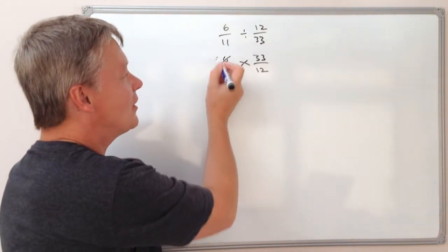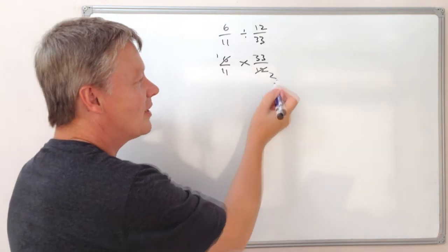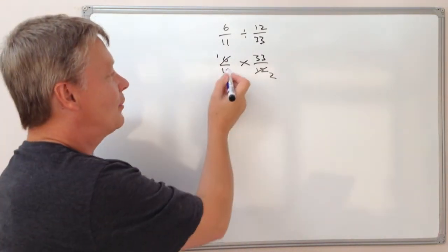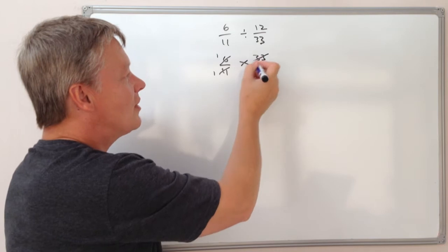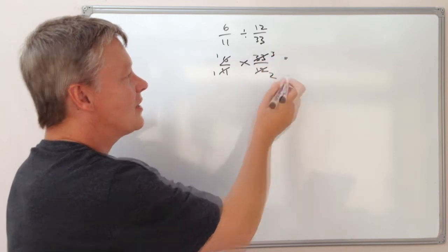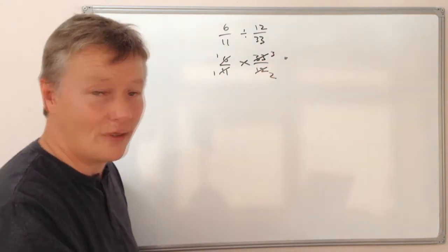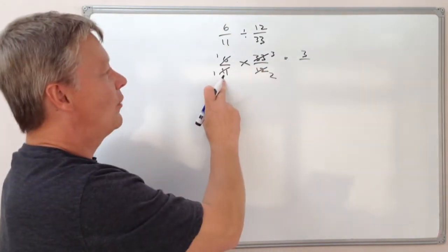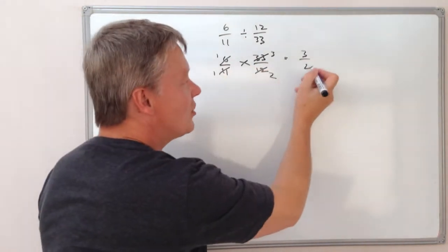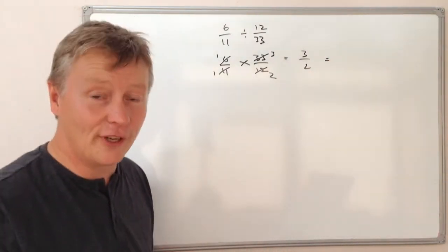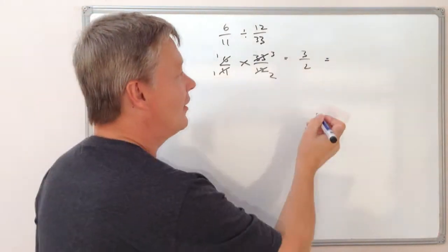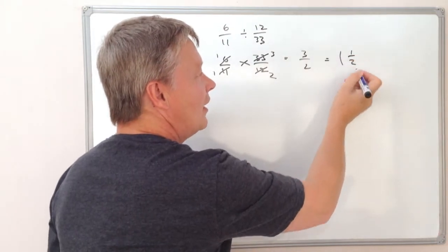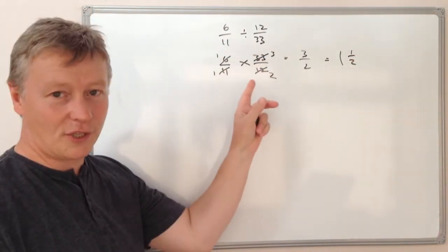So if I divide the top by 6 I get 1 and the bottom by 6 I get 2. The bottom by 11 I get 1, the top by 11 I get 3. So now if I multiply those together I get 1 times 3 which is 3 divided by 1 times 2 which is 2. That's a top-heavy fraction. I'm going to convert it back to a mixed number and that's going to give me 1 and a half which is the answer to this question.